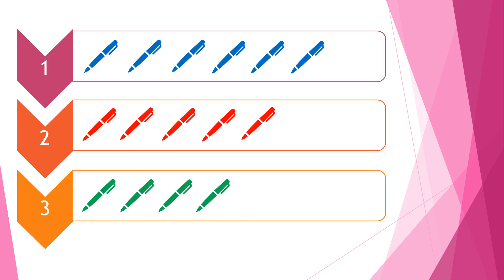Our first three questions are to see how many blue pens there are, how many red pens there are, and how many green pens there are. We use the tally system for this, and our 10 seconds start now.